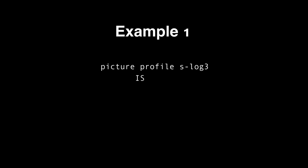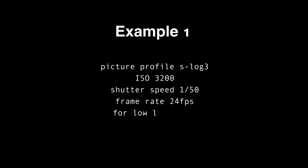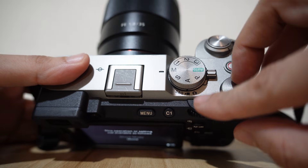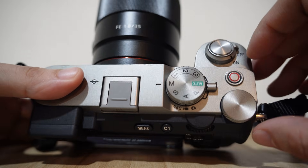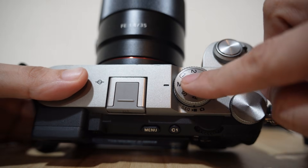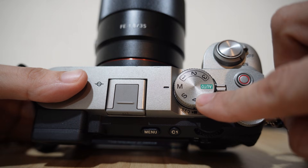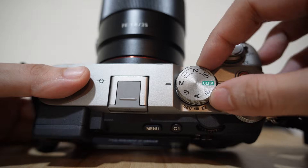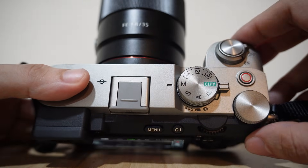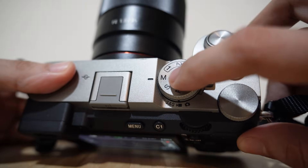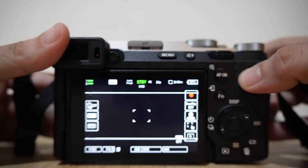I will show you how I set my movie settings as an example. I want dial 1 to be S-Log 3 low light setting, and dial 2 for movie mode. The first thing you have to do is decide your exposure type — whether you are using full manual mode, shutter priority, aperture priority, or program mode. Once you decide, you cannot change it back unless you set everything from the start, so I will choose manual mode.